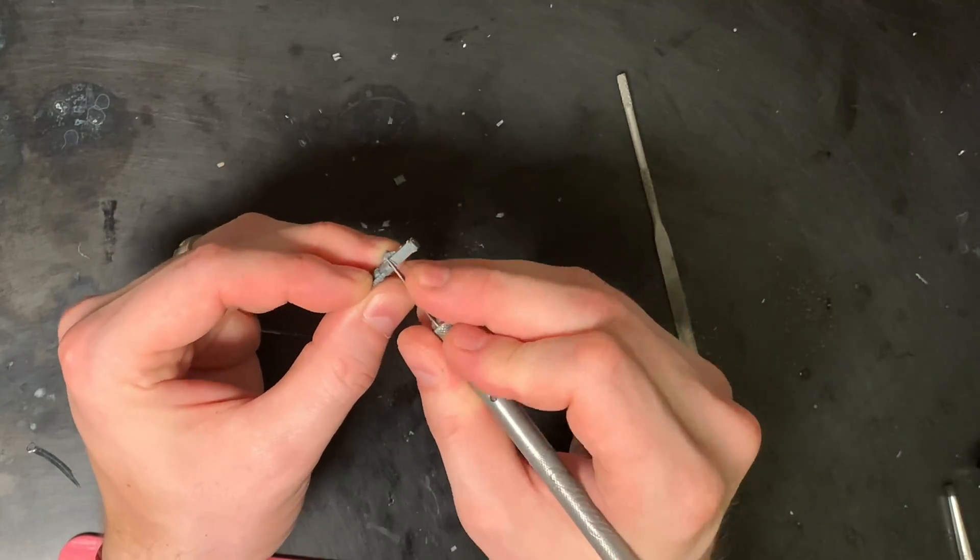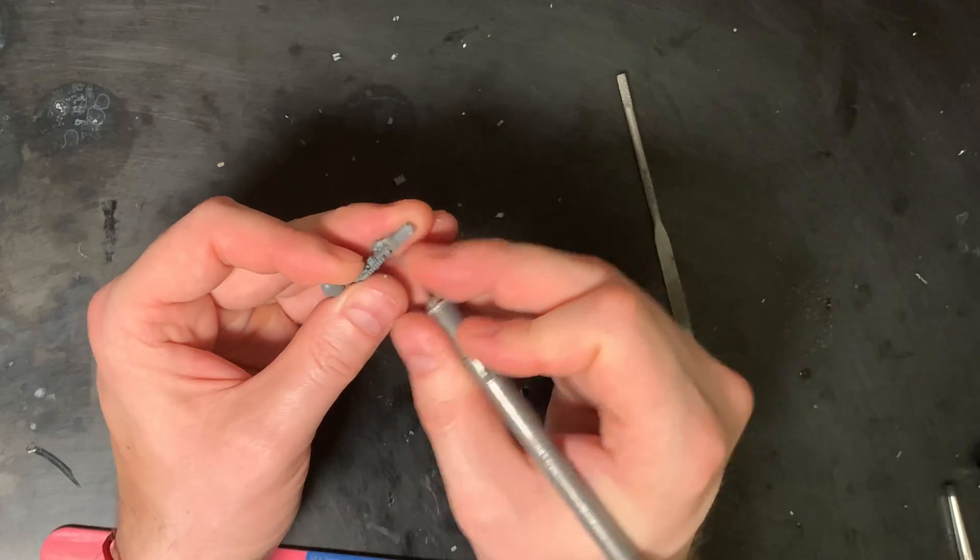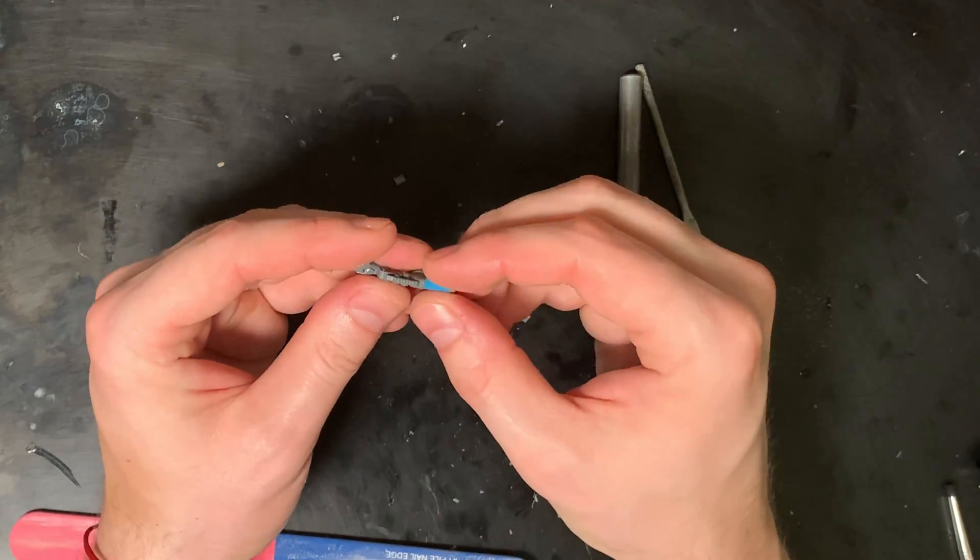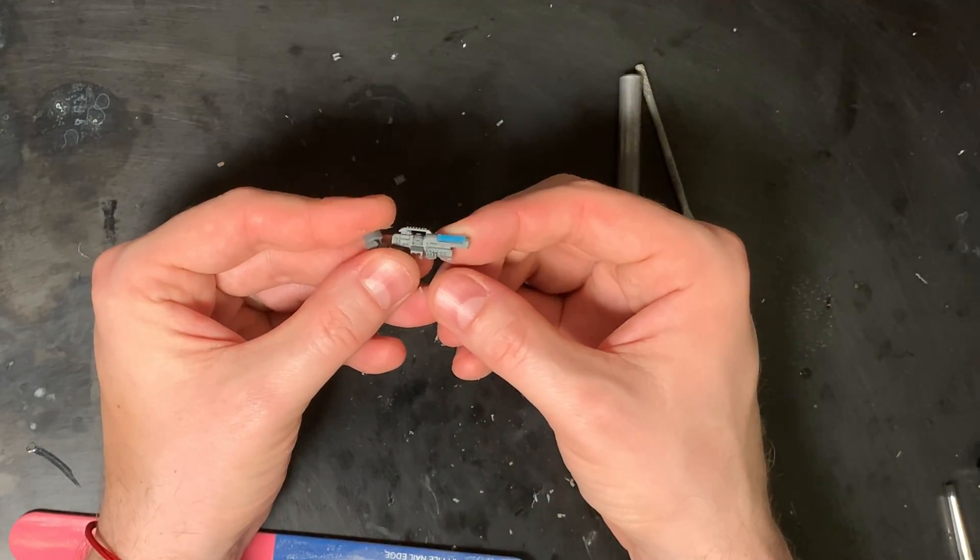Once I'm to the point where the plasma coil is starting to fit, I'm gonna pull out a file and use the file and the X-Acto knife to kind of get my final fit.